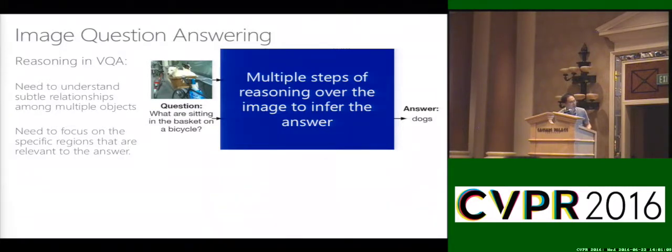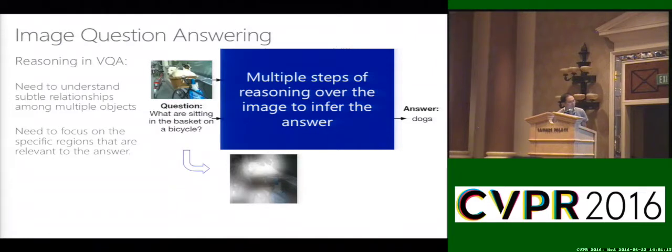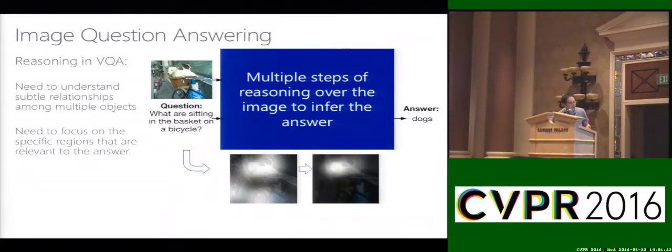Therefore, we need to perform multiple steps of reasoning to infer the answer. For example, in the first step we hope we can focus on the regions which are relevant to the question in the image, for example all the concepts mentioned in the question. Then in the second step we hope we can narrow down to the region that is really relevant to the answer and suppress other parts which are not relevant. This gives us more precise inference to the answer.